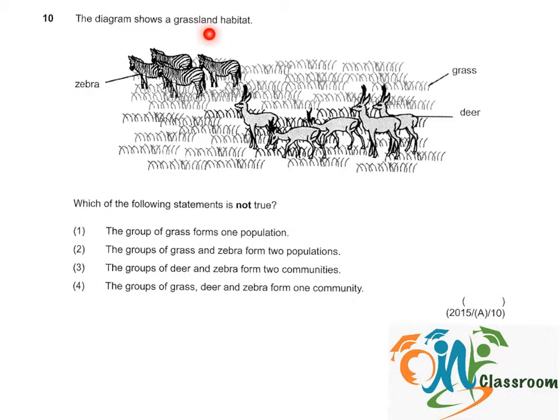The diagram shows a grassland habitat. Which of the following statements is not true? Option 1: the group of grass forms one population. A population refers to a group of organisms of the same kind living together and reproducing in the same place — so this is correct. Option 2: the groups of grass and zebra form two populations, the grass population and the zebra population — this is also correct.